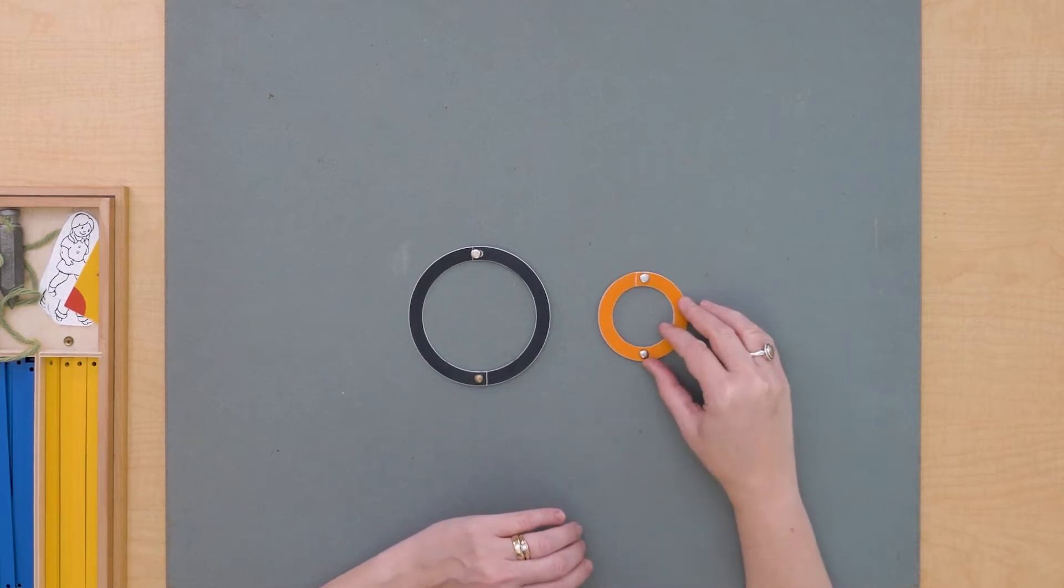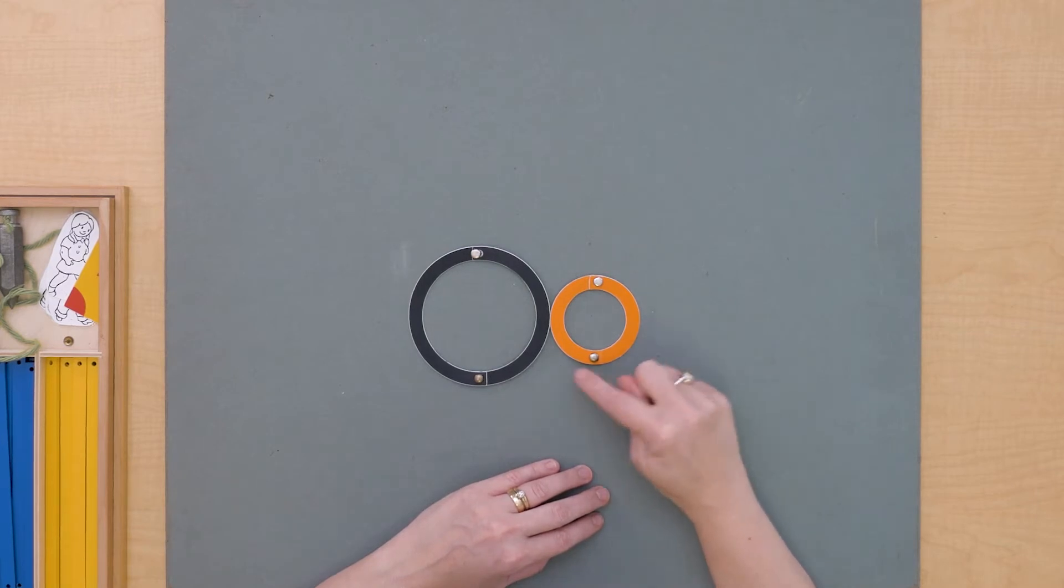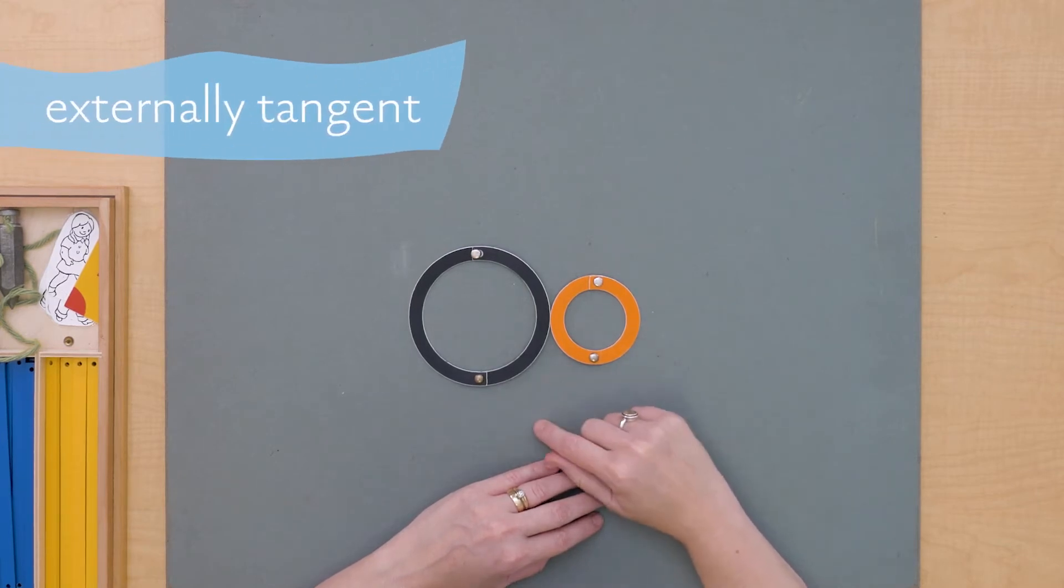But if I move it here to just that their circumferences touch at one point, we can say that these two circles are tangent. And in fact, they are externally tangent.